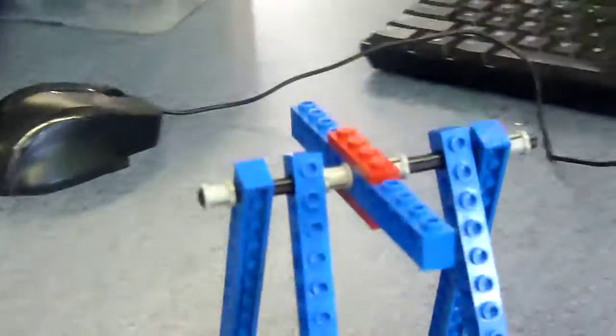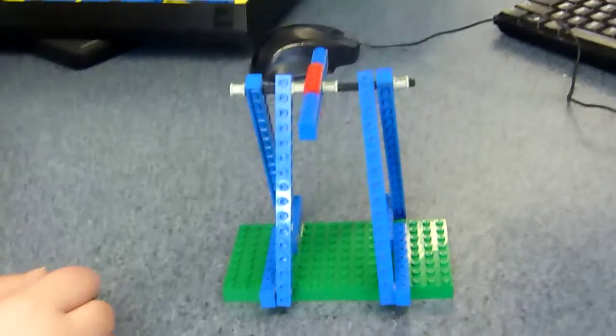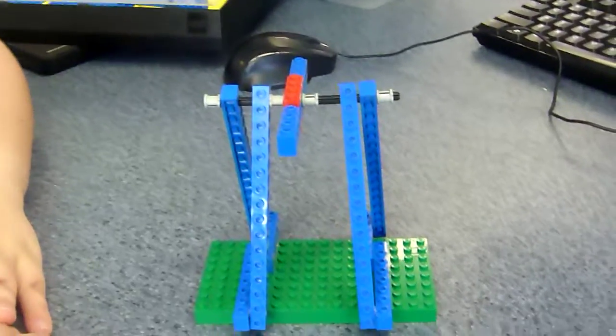A class one lever has the fulcrum between the effort and the load. They make work easier by reducing the amount of force necessary to move a load. Examples include a seesaw or a crowbar.